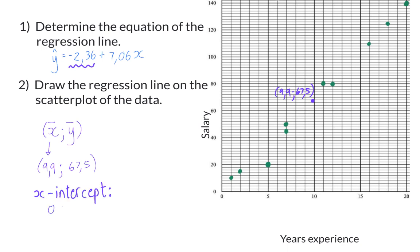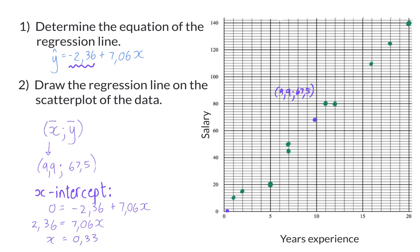This we do like always by changing the y value to 0, and then solving for x. The x-intercept will then be at 0 comma 33 on the x-axis, and now I can go and connect these two coordinates to draw my regression line.